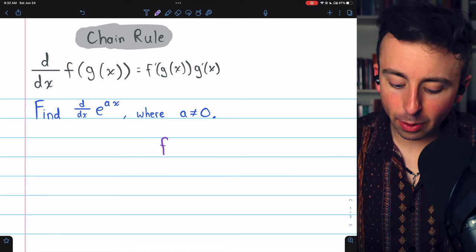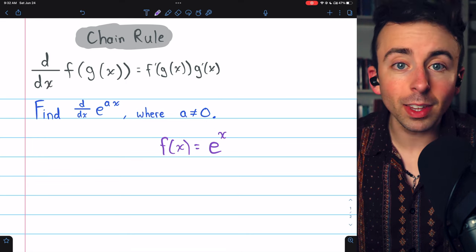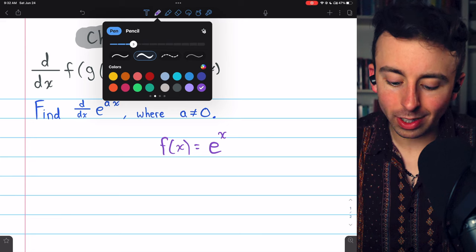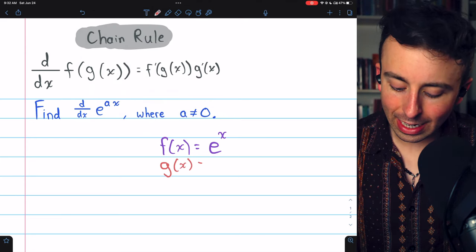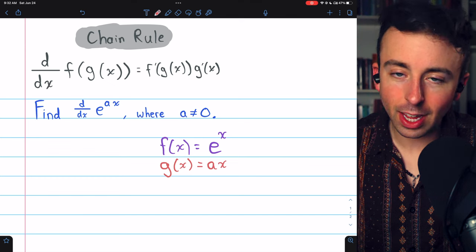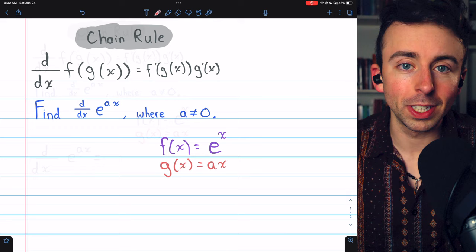In our case, the outside function, which we'll call f of x, is just e to a power. It's e to the x. That power, that inside function, which we will call g of x, is just the linear function a times x, where again, a is some non-zero real number.